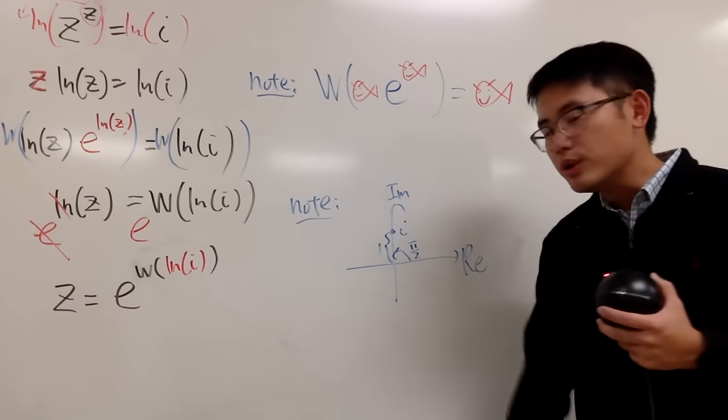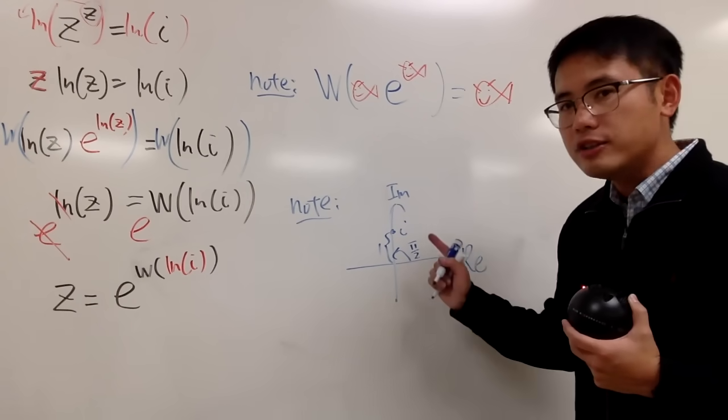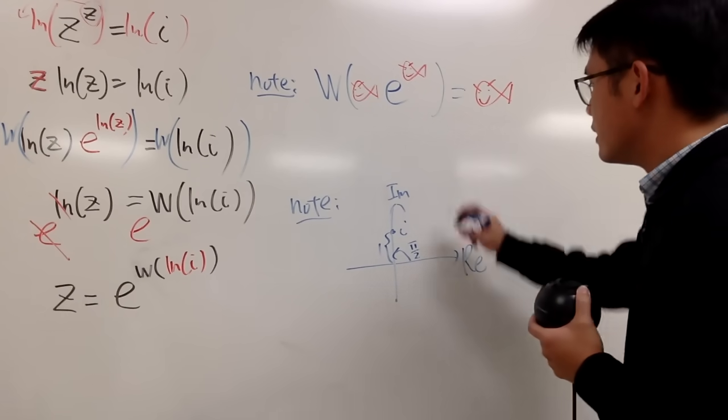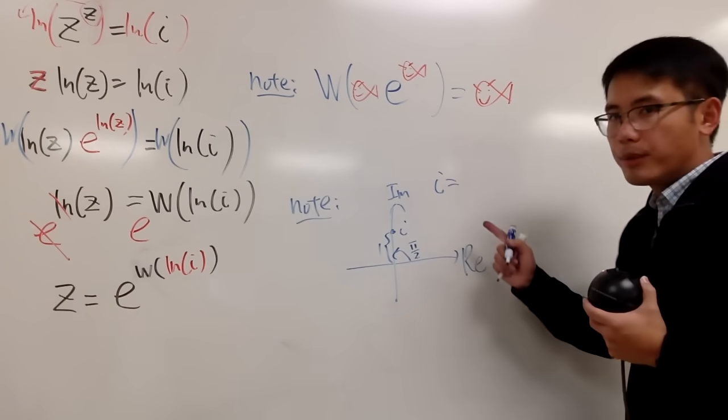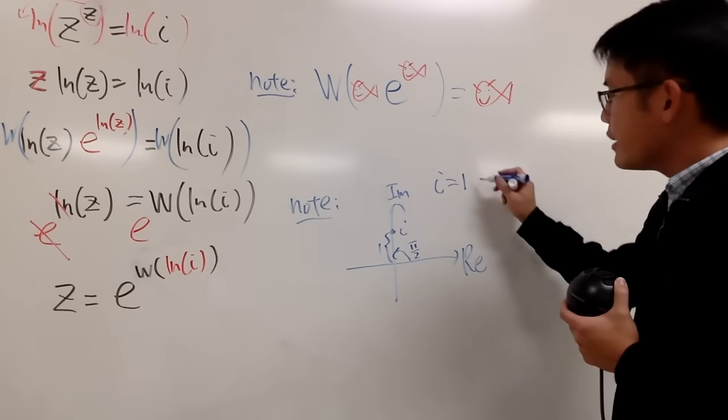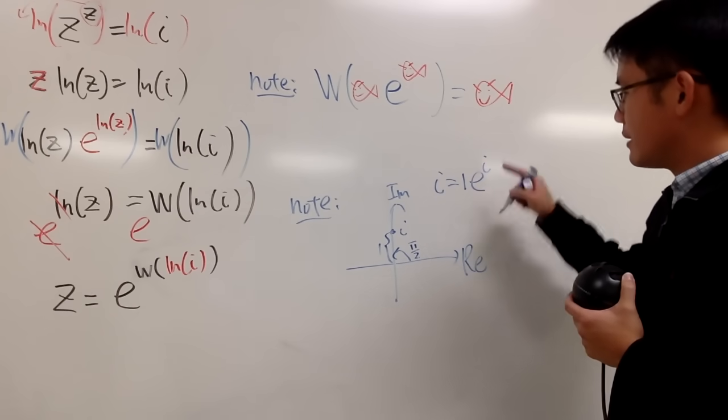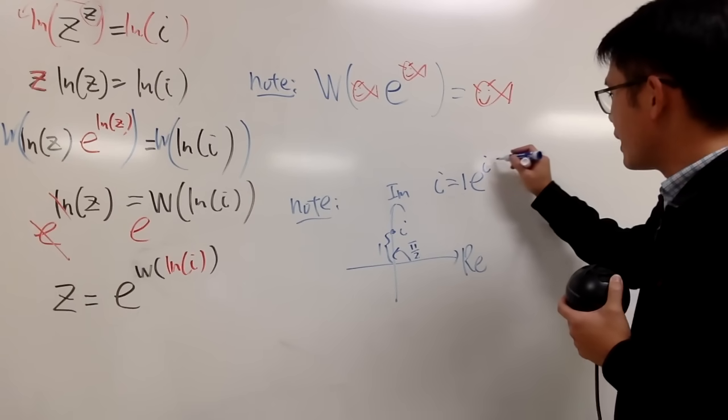So what we can do is that, we can look at i, which is in the standard form. We can change that to the polar form. So i is equal to, to get to the polar form, you need the 1, which is the distance. And then you multiply by e raised to the i theta, which is this angle that we have at the moment.